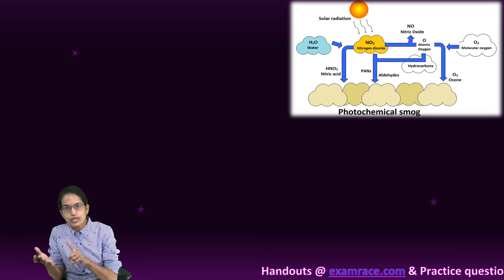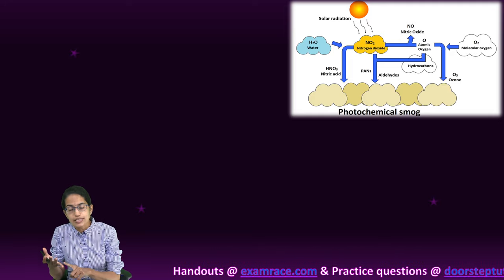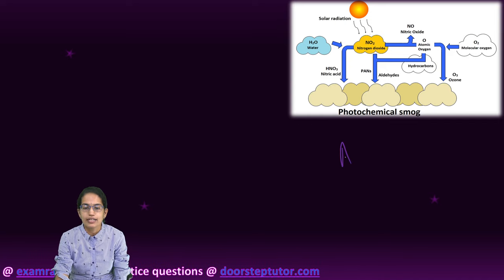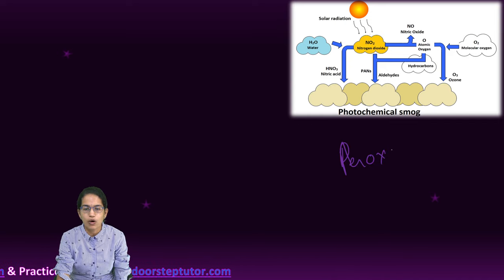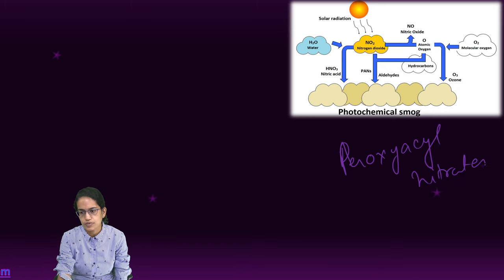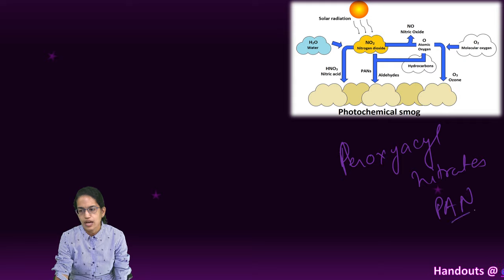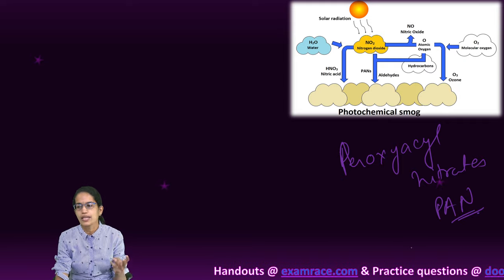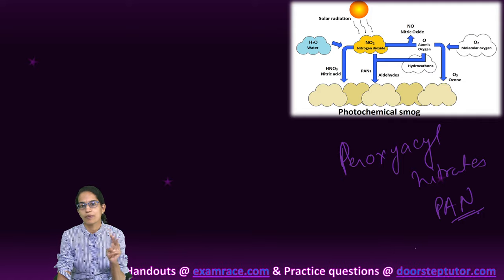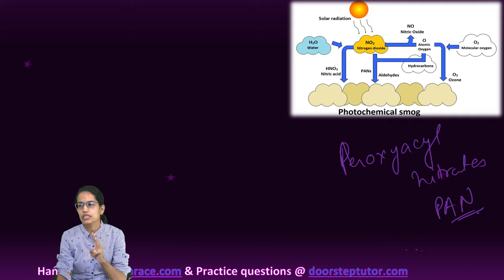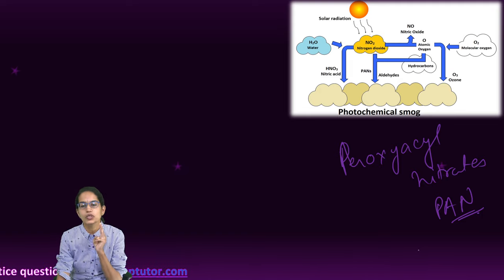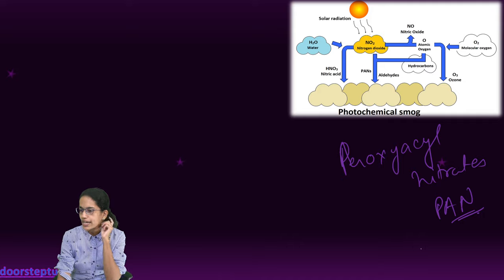Any form of ozone, nitric acid, panaldehydes, or peroxyalkyl nitrates — known as PAN — are created. Nitrogen dioxide, ozone, and PAN are the main photochemical oxidants which are produced because of this reaction, and this photochemical smog is highly detrimental.